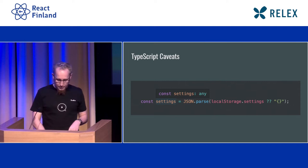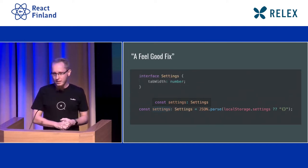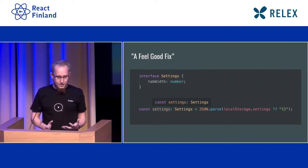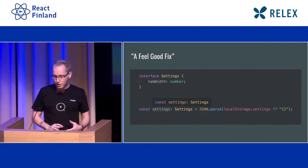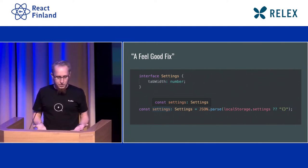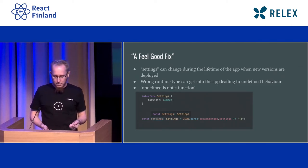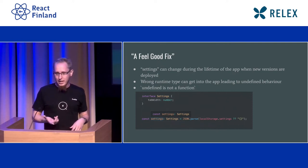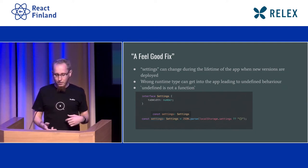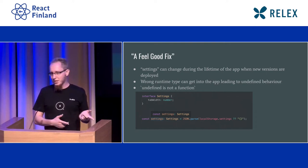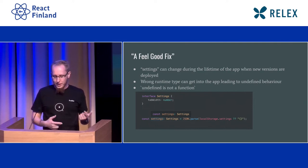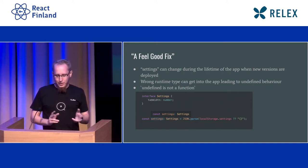Another source of any types is local storage. And there's what I call a feel-good fix for those any issues — just defining the interface or the type you want to use and putting it in your code. And boom, the any type is gone. You don't see it anywhere, and all your coding is easy because you get autocompletion and everything works. But this code of course has some issues, because just using a type like that is basically a typecast. Which means if you deploy a new version of your app where you change the local storage settings format, in the new version it will load the old version of the settings, and now you have mismatched types — a different type at runtime than what you have in TypeScript.